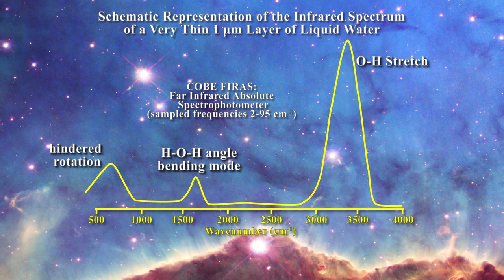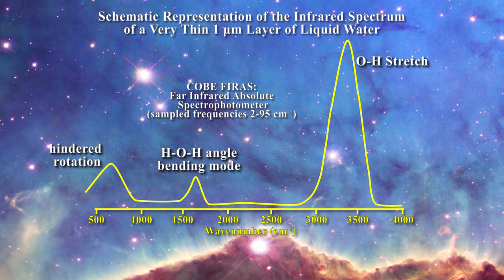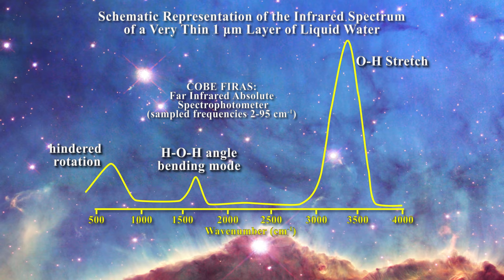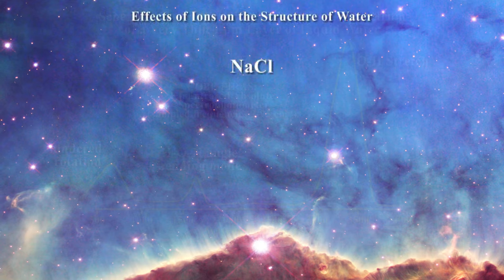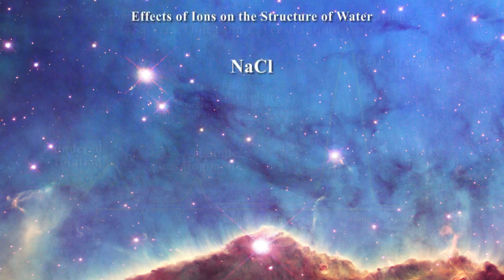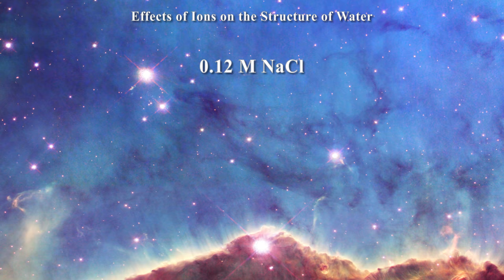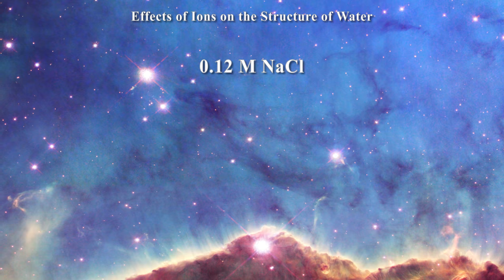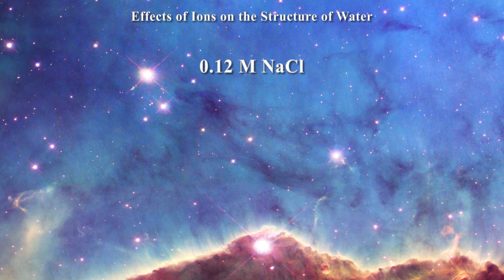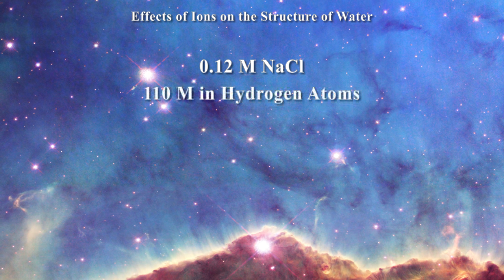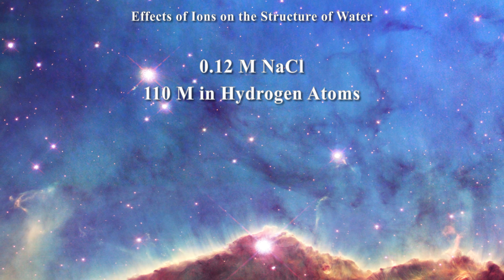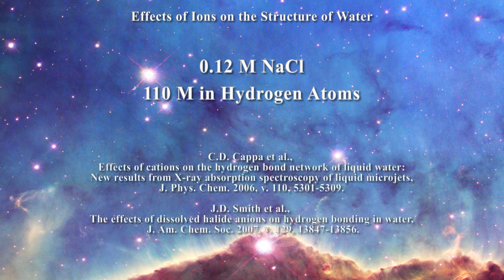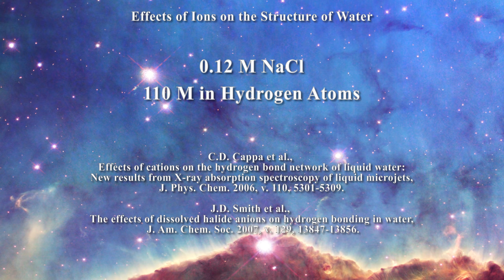Now before we close for today, there is another problem to consider when thinking of water and the oceans of the earth, namely that they possess ions. Sodium chloride is well known to exist in seawater. In fact, seawater is about 0.12 molar in sodium chloride. So how does that affect our structure of water when water is 110 molar in hydrogen? It turns out that the presence of sodium chloride at these concentrations has very little effect on the structure of water as one can learn in these two papers.